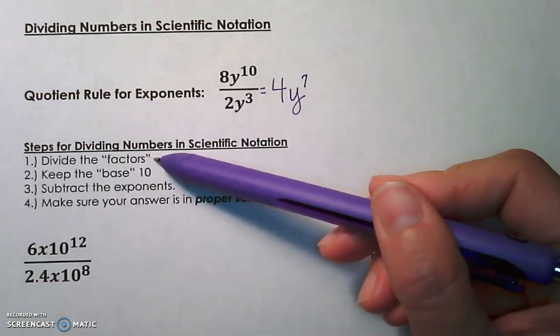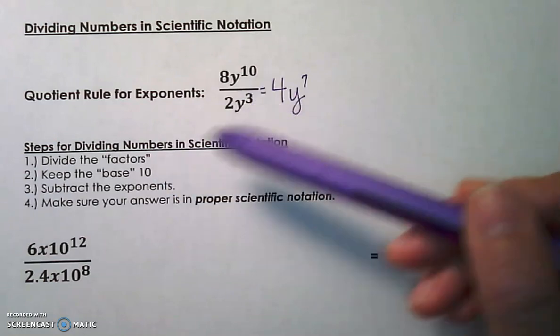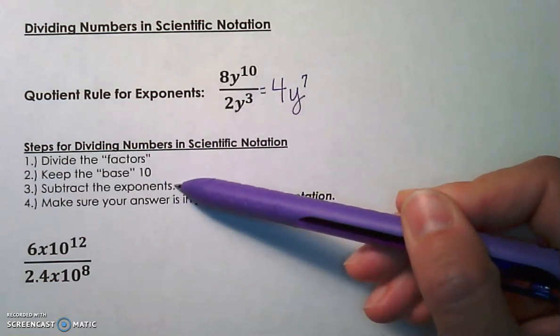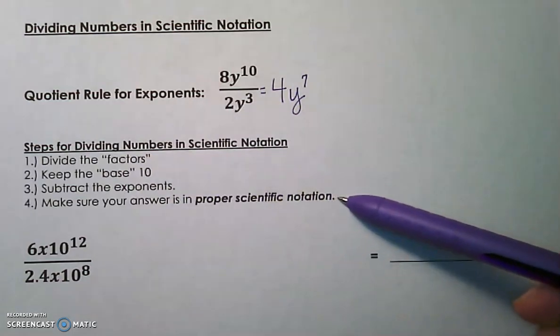So we are going to divide those numbers, we keep our base of 10, those are just like the y's in the top example, and then we subtract the exponents. And the last step is to make sure your final answer is in proper scientific notation, and we'll look through a couple of examples where we have to adjust the answer at the end.